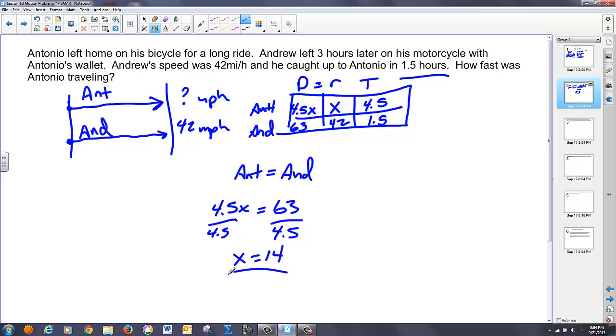So, what does X represent in this case? X represents a rate, so this is miles per hour. And that's Antonio's speed, and that's exactly what they wanted us to find out. So, this is our answer. Let's take a look at another.